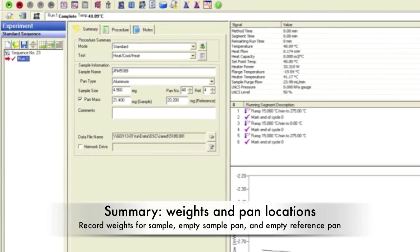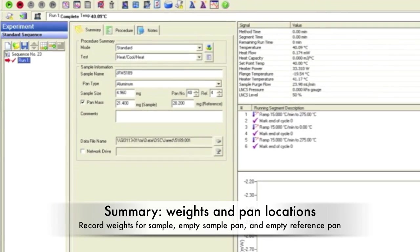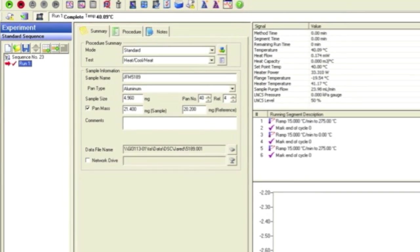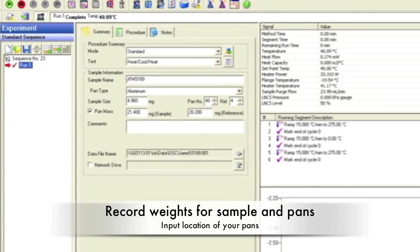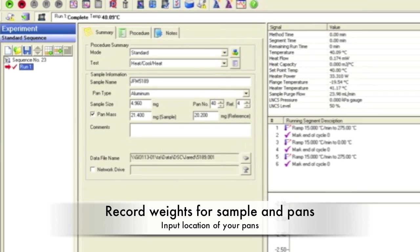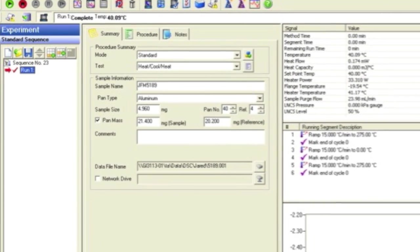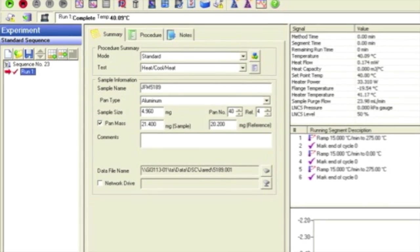In the summary tab, specify the test as custom and the pan type as aluminum for a solid sample and hermetic for a liquid sample. Make sure to record the weights of the sample, empty sample pan and lid, and empty reference pan and lid. Also input the pan number or location of your sample and reference pans. Enter in your sample name and save your data in the proper folder.